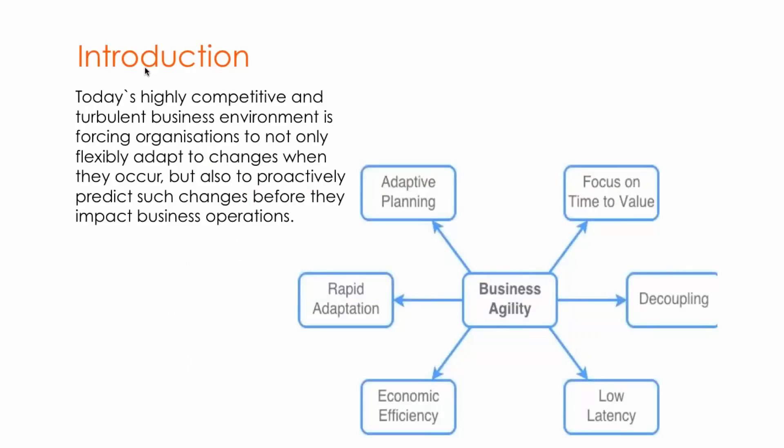Today's highly competitive and turbulent business environment is forcing organizations to not only flexibly adapt to changes when they occur, but to also proactively predict such changes before they impact business operations. Organizations that want to remain at the forefront can use enterprise architecture to gain organizational or business agility. As shown in the diagram, the components of agility include adaptive planning, rapid adaptation, economic efficiency, and low latency.